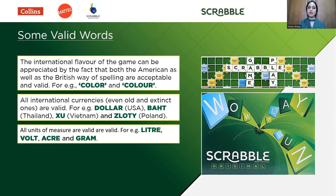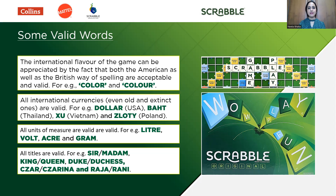All units of measure are also valid in Scrabble — be it litre, metre, gram, kilogram, acre, hectares, etc. And all titles are valid, be it Sir, Madam, King, Queen, Czar, Zarina, Rex, Regina, and even our very own Raja, Rani, Maharaja, Maharani, Swami, Mahatma, Priest, and Kazi.